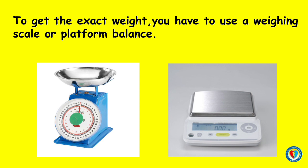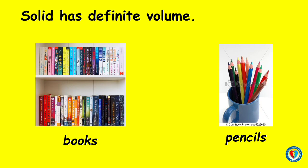To get the exact weight, you have to use a weight scale or platform balance. A solid also has definite volume. Solids like books and pencils occupy space.